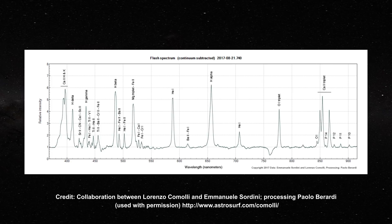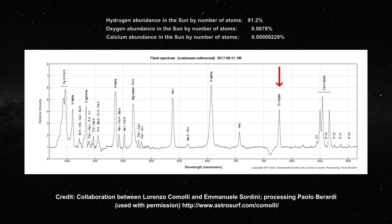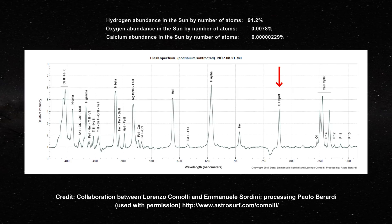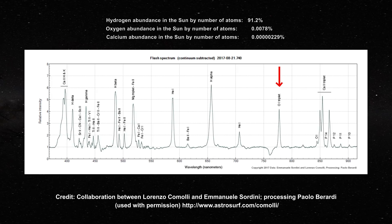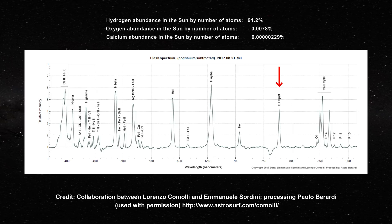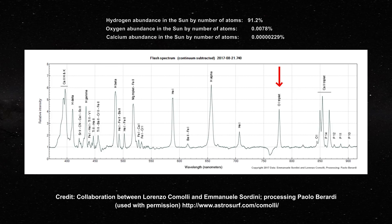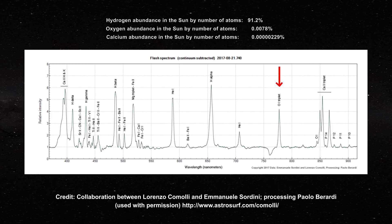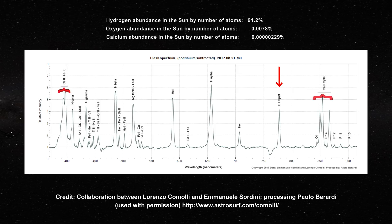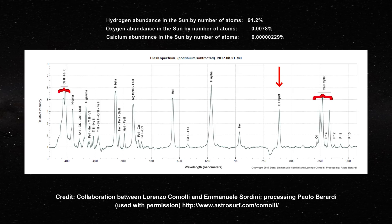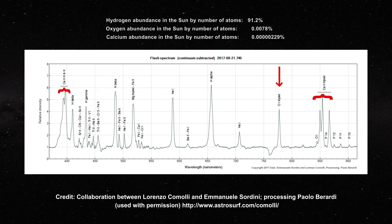By total number of atoms, oxygen is supposed to have an abundance of less than one-tenth of the percent of the number of hydrogen atoms in the sun. Yet look at the strength of the oxygen line around 780 nanometers. Then consider the calcium lines at 490 and 860 nanometers. Wow!